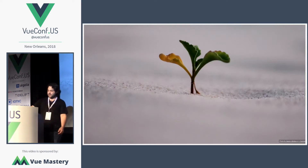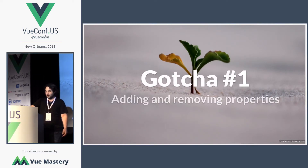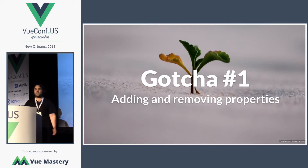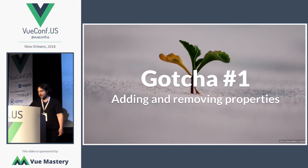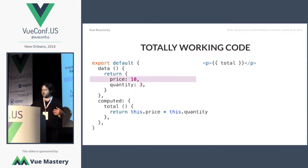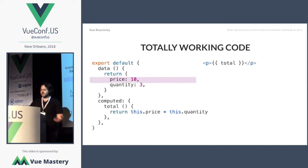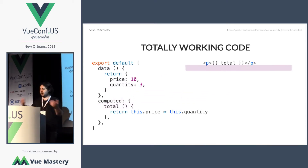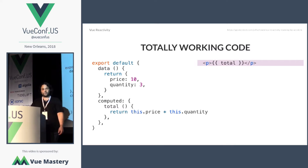Let's dive into gotcha number one, which is adding and removing properties — probably the one that most of us have run into. I'm going to start by showing you some totally working code. Let's say you have a simple component with price and quantity, you want to compute a total out of that — price times quantity — and output that into a template. Pretty straightforward stuff.